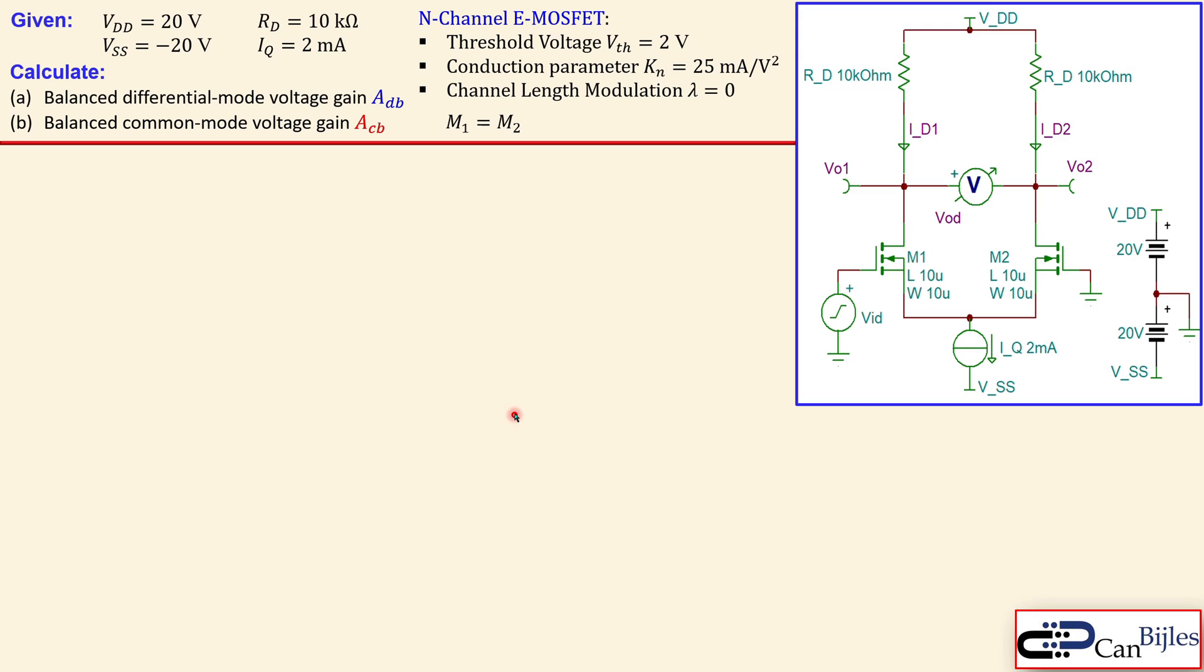We have the circuit here. You see a similar configuration as we have discussed for the BJT differential pairs. You see the two N-channel MOSFETs, enhancement type, the threshold voltage, the conduction parameter, and the channel length modulation for each transistor is given, M1 and M2. They are matched, so they have exact same parameters.